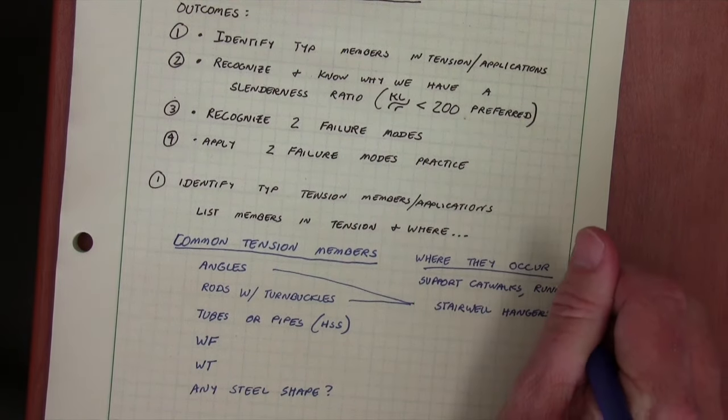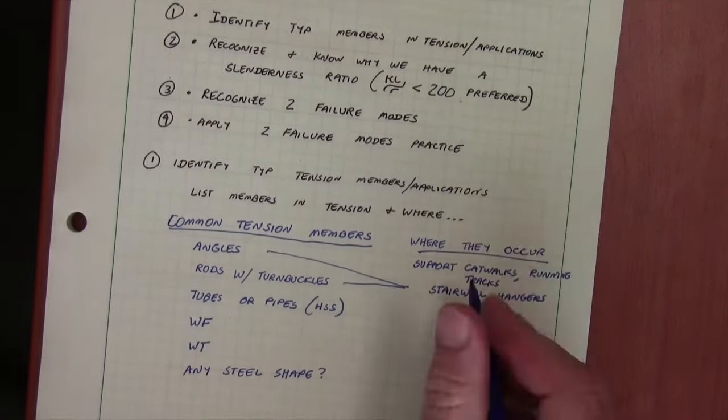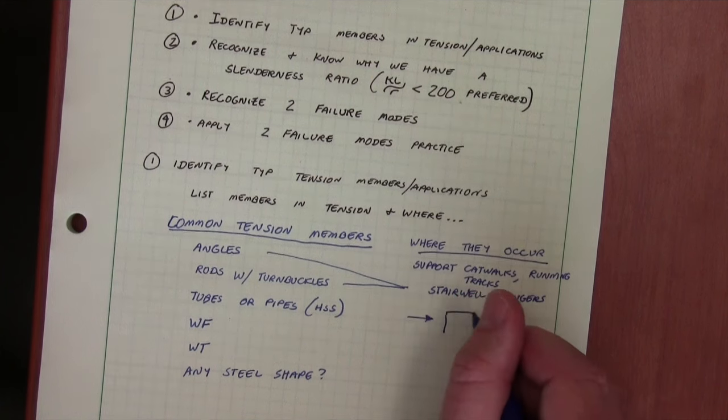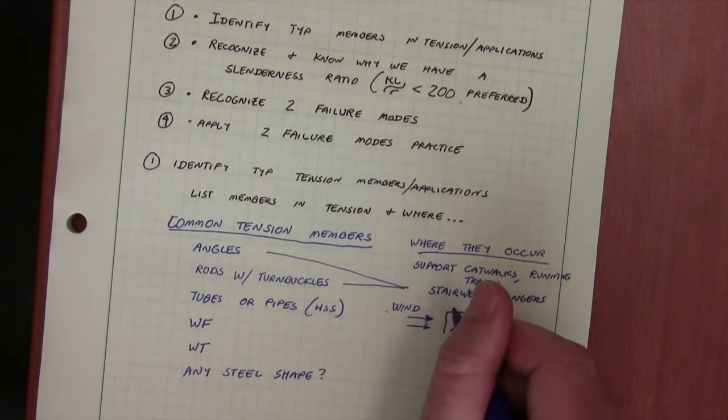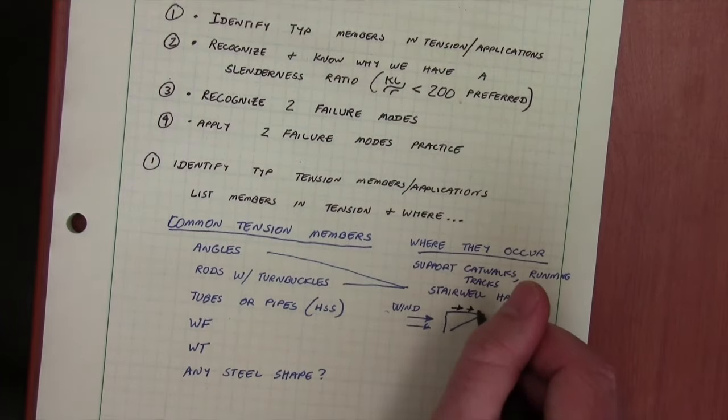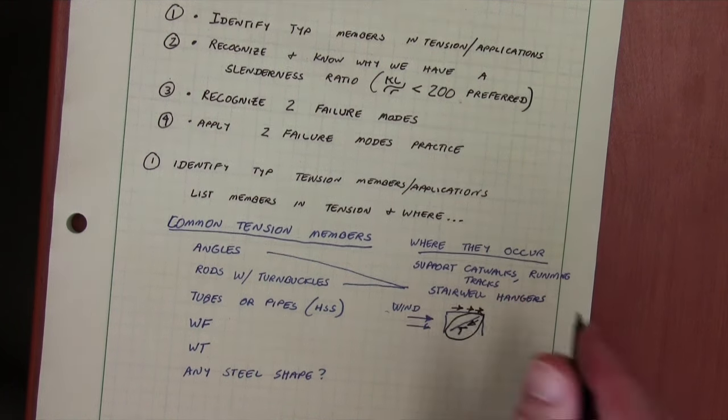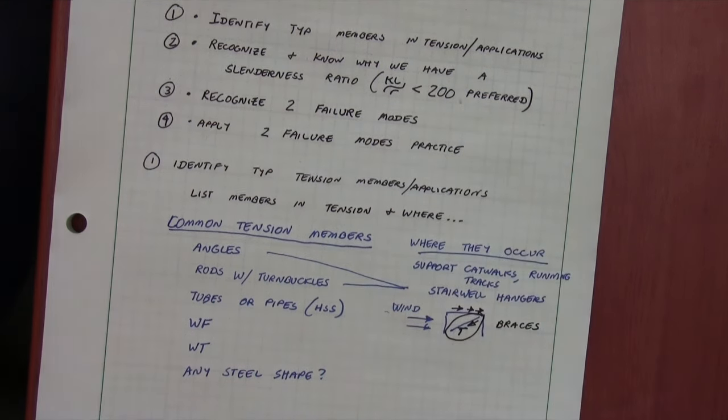These are also often used to hang catwalks or running tracks. The other application that's pretty common if you think about wind-owned buildings and maybe a compression strut. The diagonal member is often in tension and that tension is a brace, so it could be a brace. We could also talk about trusses.